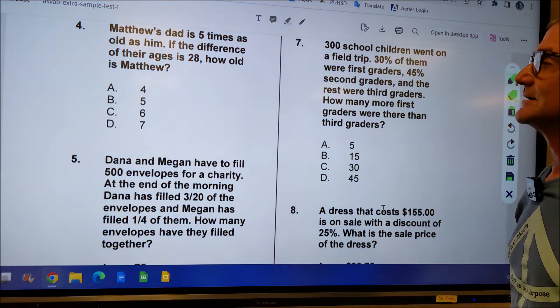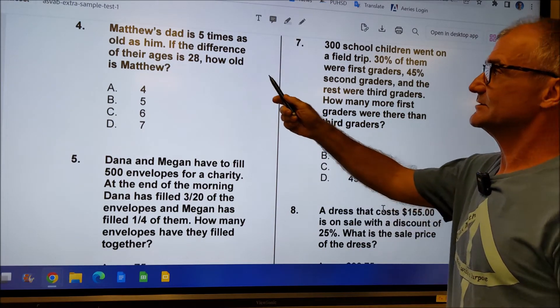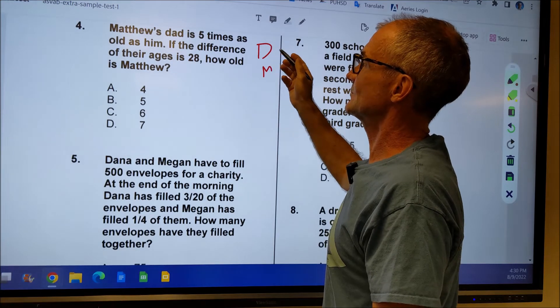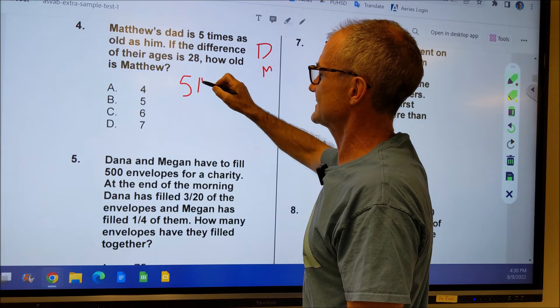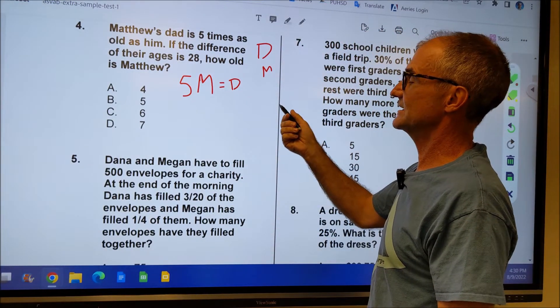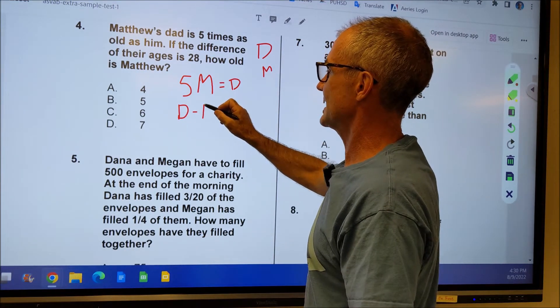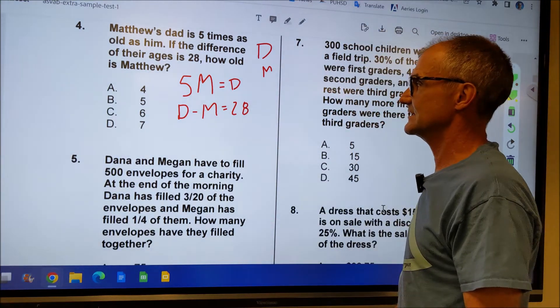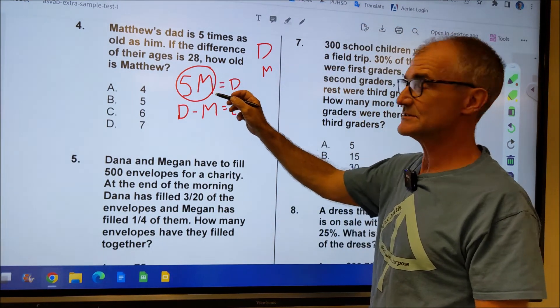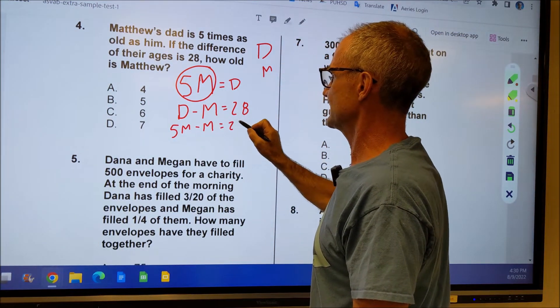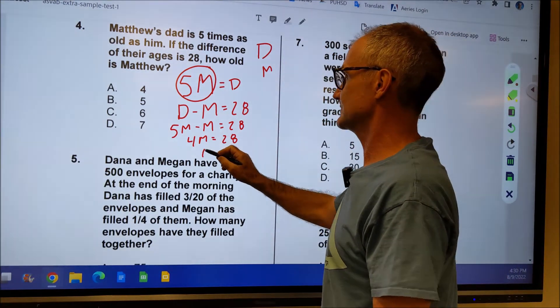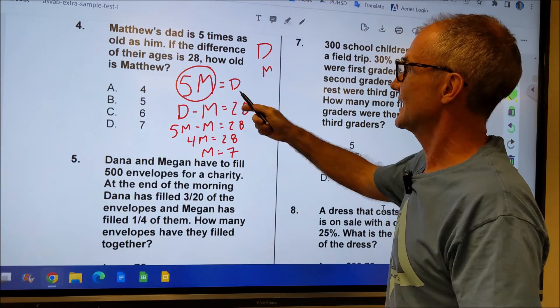Problem number four. This is an algebra problem. So you might want to go back to chapter eight and watch review on algebra. I got two people or two variables, Matt's dad is five times old as him. So five times Matt's age is equal to the dad's age. I have two variables here. So I need a second equation. The difference of their ages is 28. So dad's age minus Matt's age is equal to 28. Now I have two equations and I can solve. I know that D is equal to 5M. So that means I could replace this D right here with a substitution of 5M. So I have 5M minus M equals 28. 5M minus M, I have 4M equals 28. Divide both sides by 4 and M is equal to 7. So Matt's age is 7. How old is Matt? 7.